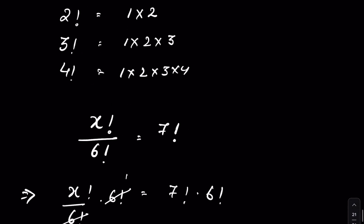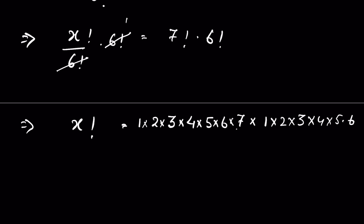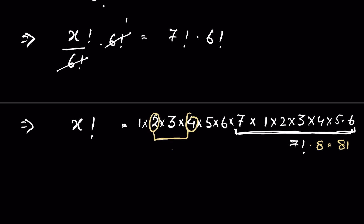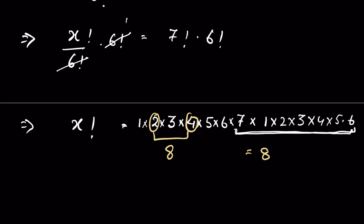There is an important property with factorials: if we have 3 factorial and multiply 4 to it, this becomes 4 factorial. So here, if we take the product up to 7, that is 7 factorial, and multiply it by 8, it becomes 8 factorial. Now 2 times 4 equals 8, so this is 7 factorial times 8 equals 8 factorial. Cancelling, we are left with 3 times 5 times 6 times 8 factorial.